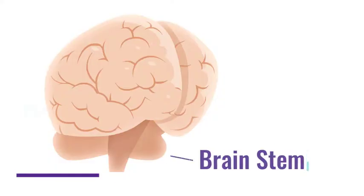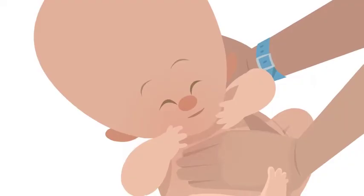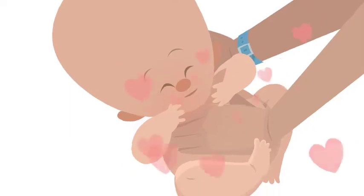There is a lot happening in the brain stem, which controls baby's survival functions. We can support positive connections by responding to baby's needs quickly and in loving ways.